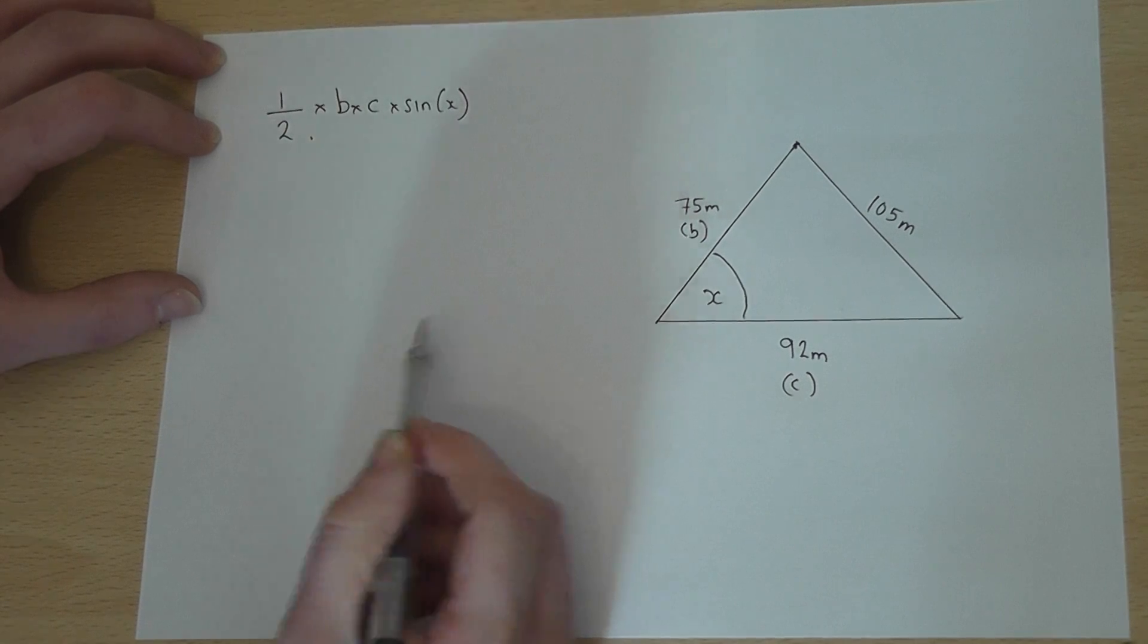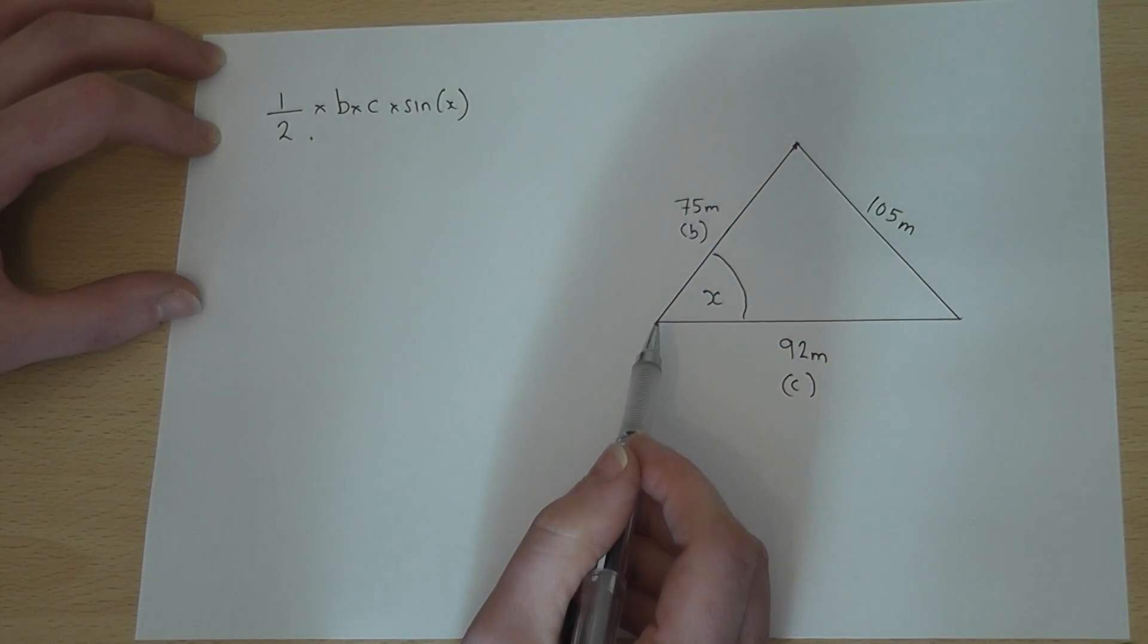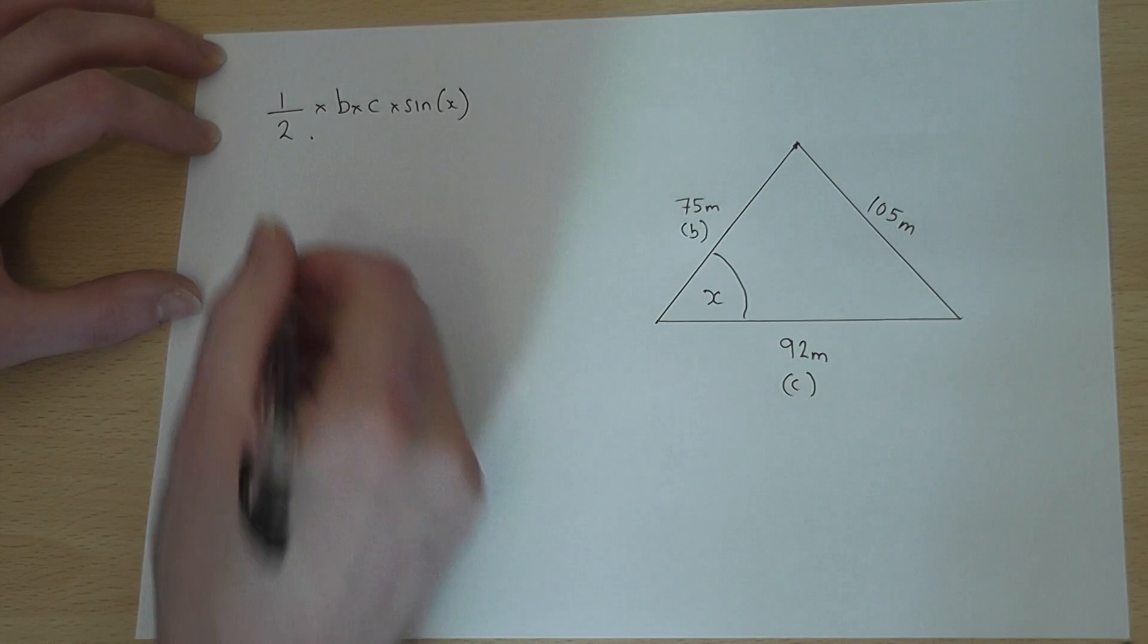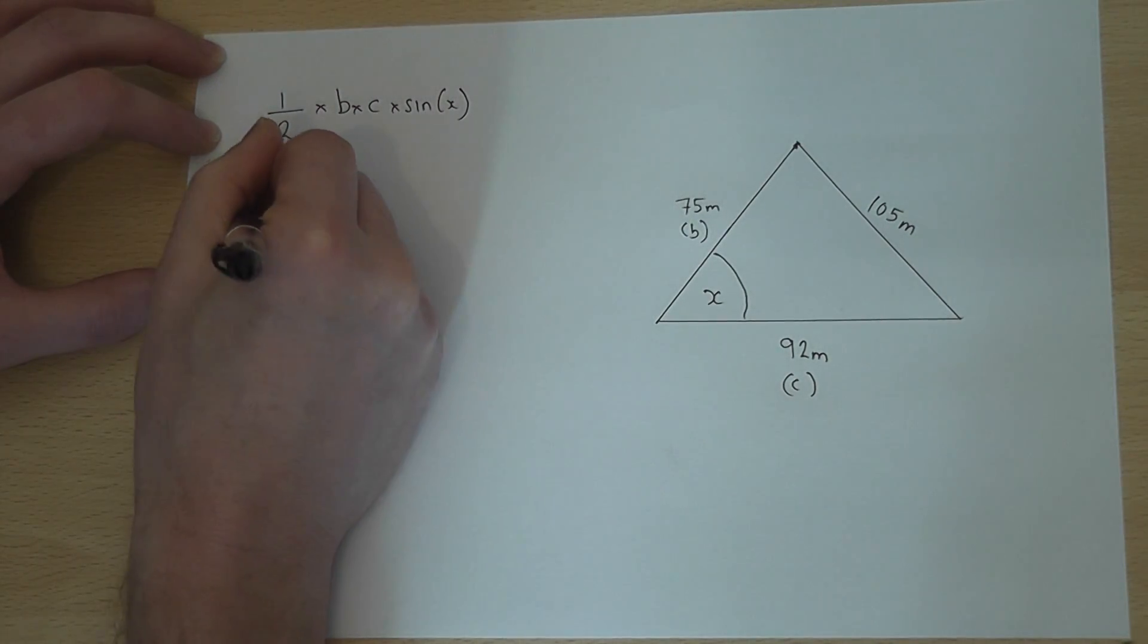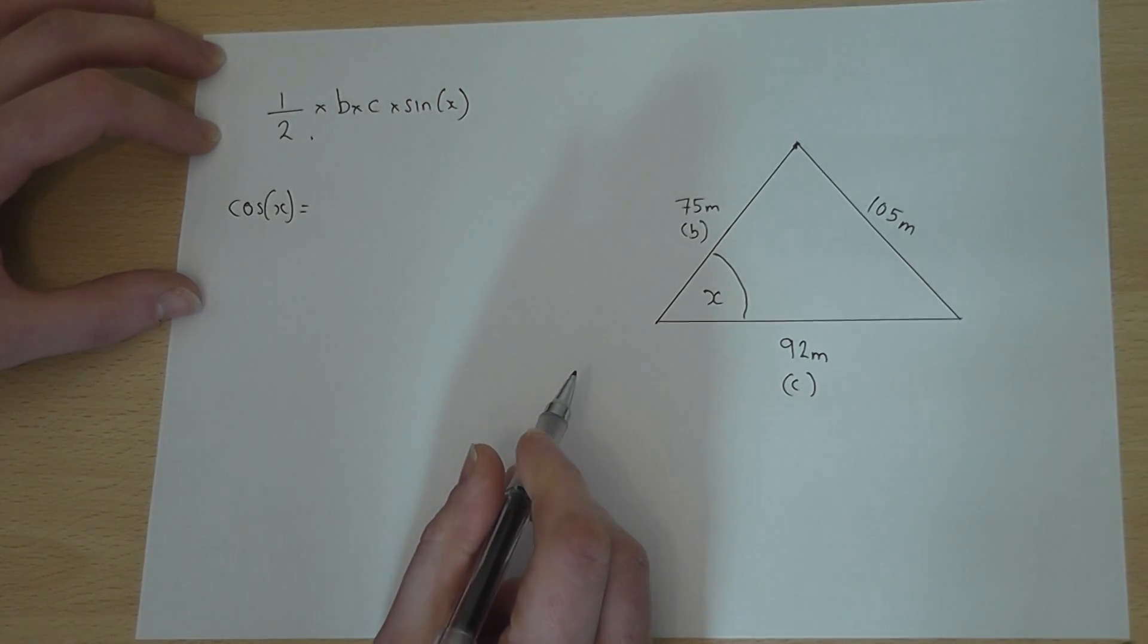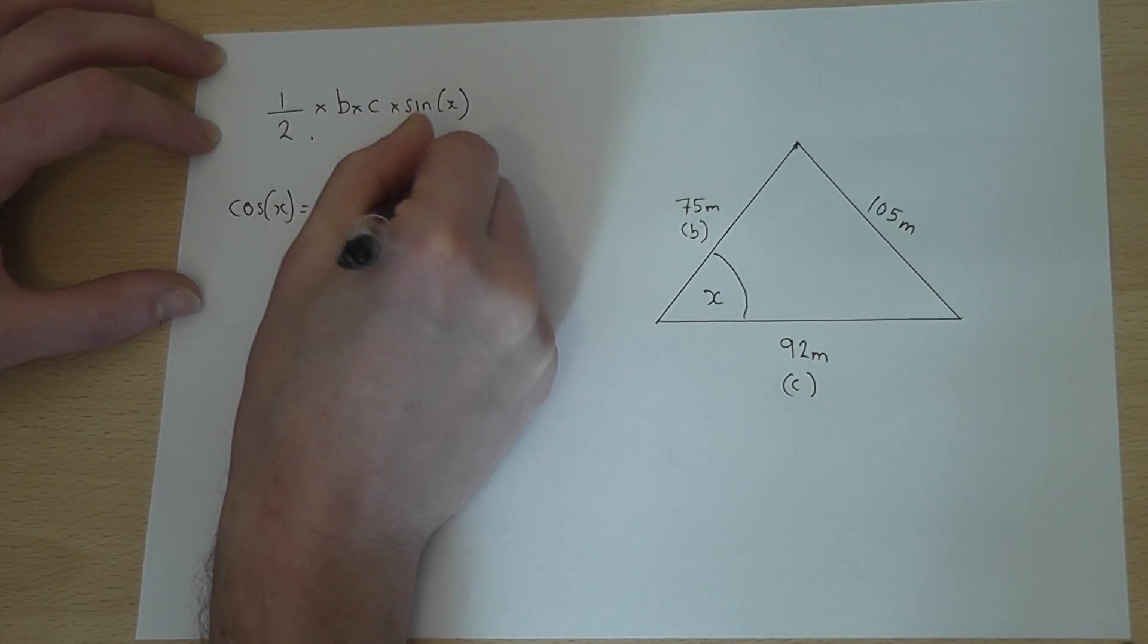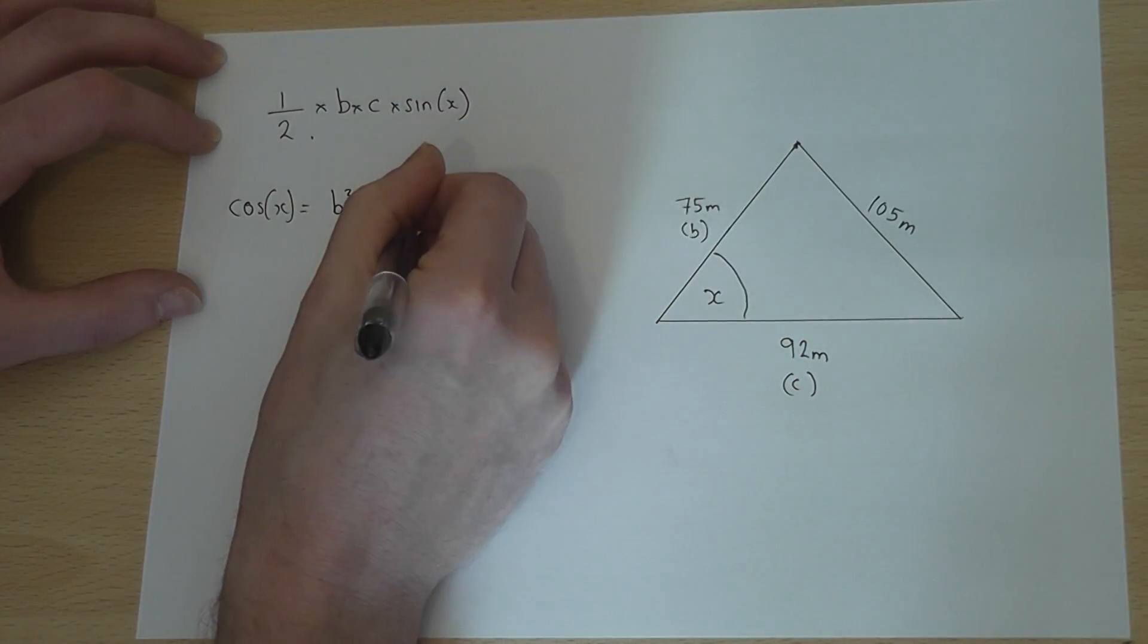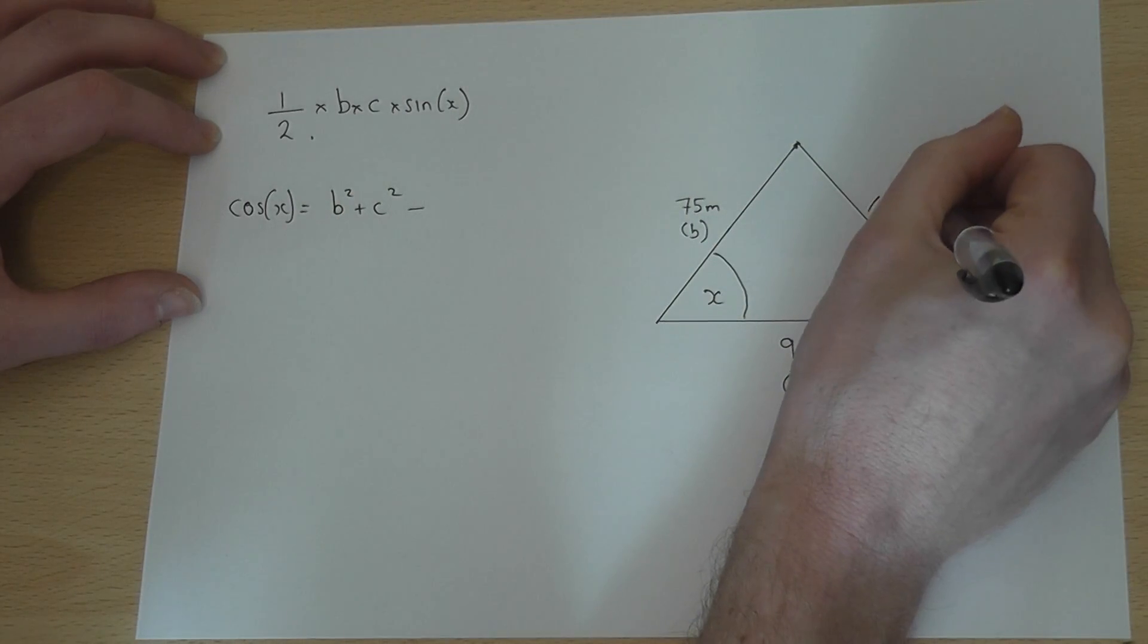Now, to find the angle, we can use the cosine rule. And the cosine rule says that cos of X is equal to... And the formula is B squared plus C squared,